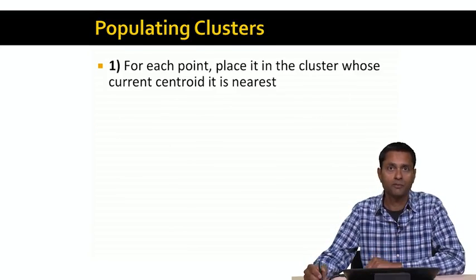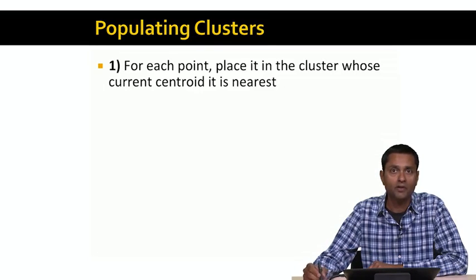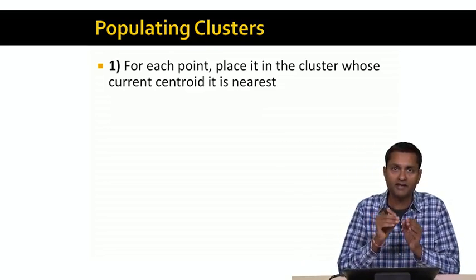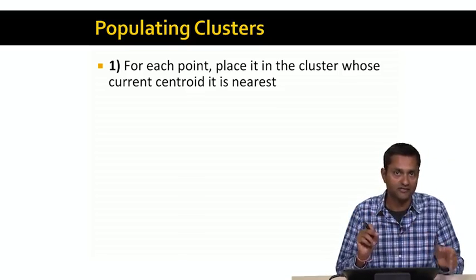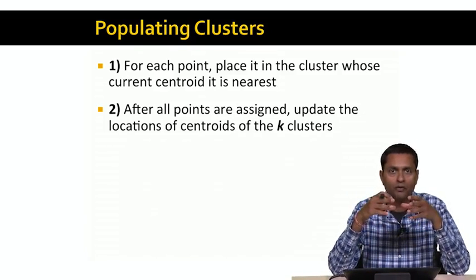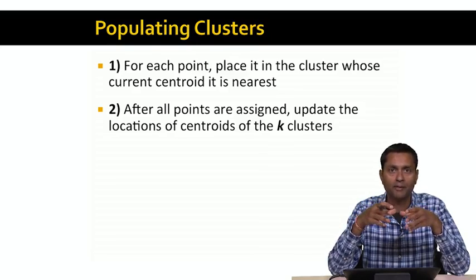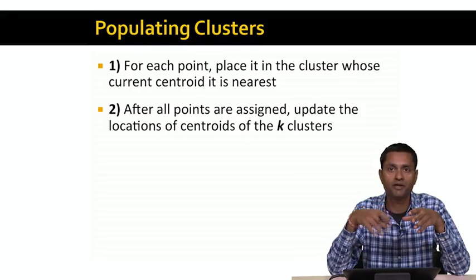Now that we have clusters populated with these k points picked at random, here's how we're going to proceed. We're going to go through all the points in our data set, and for each point, we're going to place it in the cluster to whose centroid it's closest. We find the cluster with the closest centroid to the data point and assign that data point to that cluster. When we assign a whole bunch of new data points to a cluster, the centroid of the cluster might change because of all the new data points added.